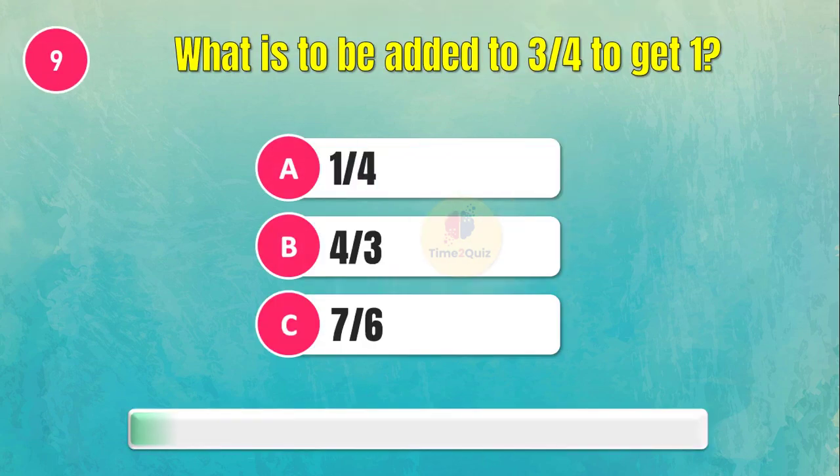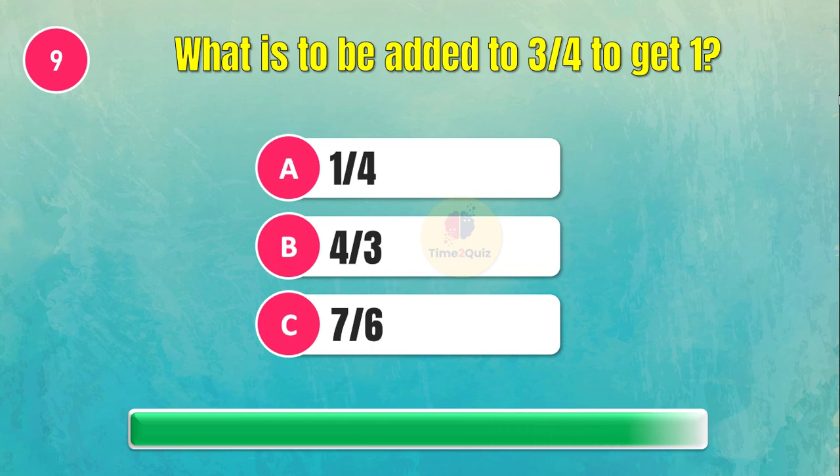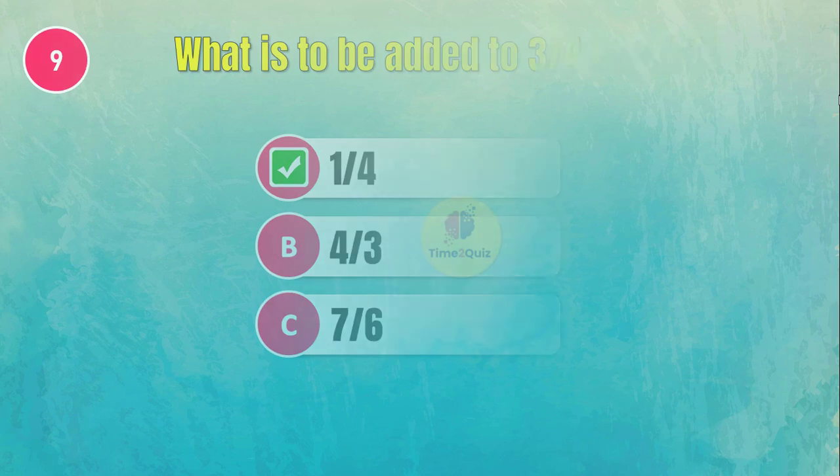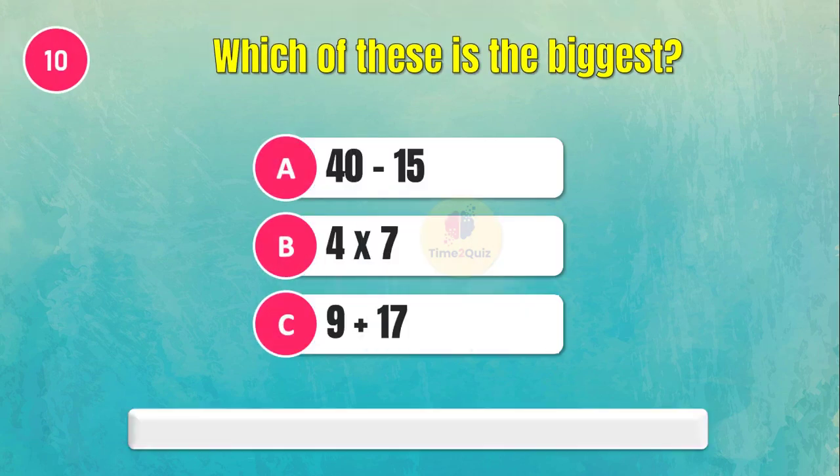Question nine: What is to be added to three-quarters to get 1? The answer is one-quarter. Question ten: Which of these is the biggest? The answer is 1.